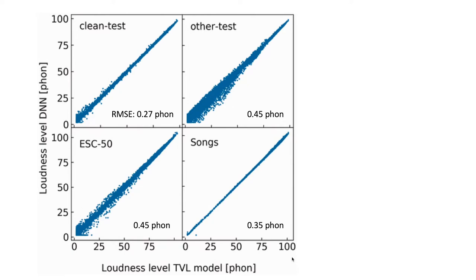Here are the results. Each panel shows more than 100,000 data points, so you mainly see the outliers. The top row shows results for clean speech and speech of lesser quality, both from the LibriSpeech corpus. The bottom row shows results for environmental sounds and for music. The outliers are mainly at lower levels that occurred less often during training and are probably less important for the applications. The root mean square error is less than half a phon for each category, which corresponds to considerably less than the one decibel target.